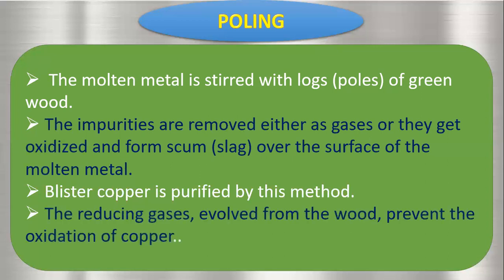The reducing gases evolved from the green wood prevent the oxidation of the copper. Sometimes reactive metals, when purified, come into contact with oxygen in the atmosphere and form oxides again, which would be wasteful. So we have to prevent the oxidation of such reactive metals during the purification stage. The gases from the wood reduce the oxidation tendency of the metals.